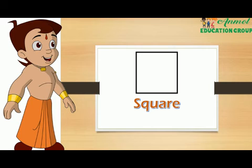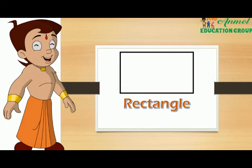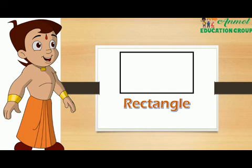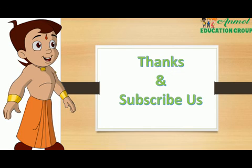Square, S-Q-U-A-R-E, Square. Rectangle. Rectangle has four sides, opposite two sides are equal. Thank you, thank you for visiting and subscribe.